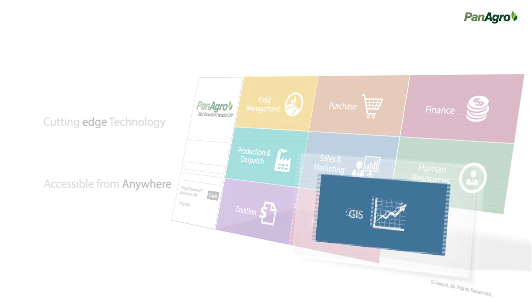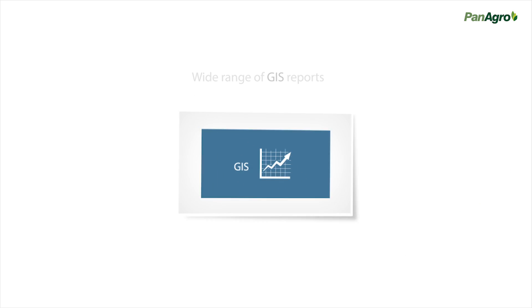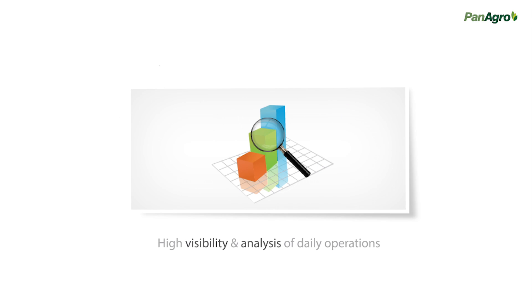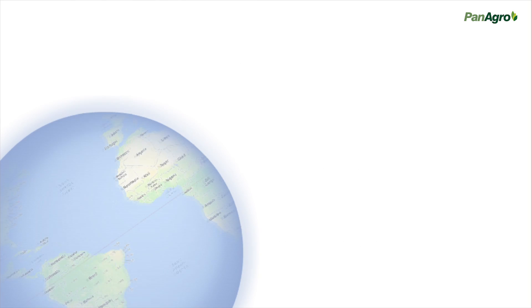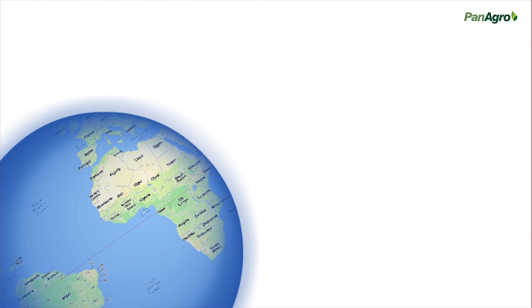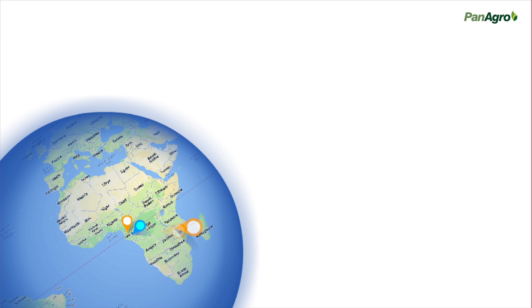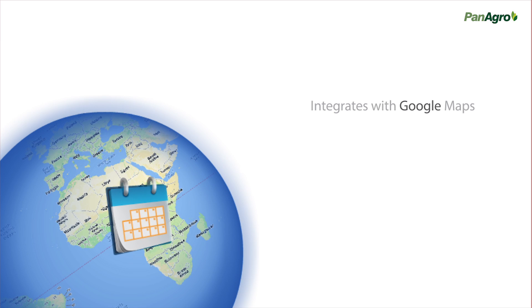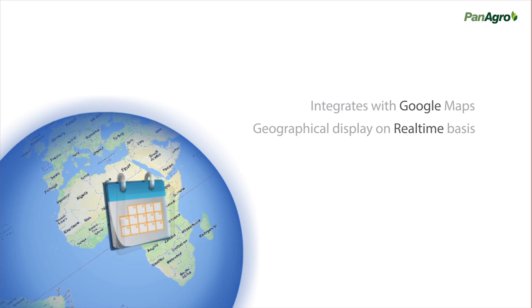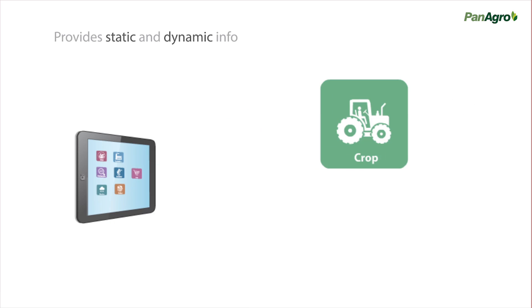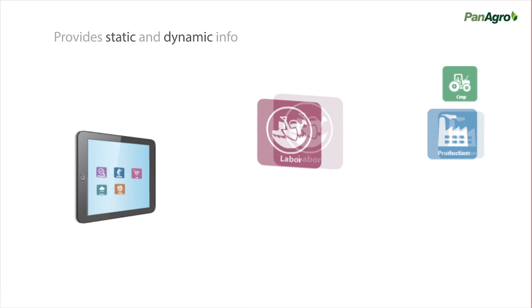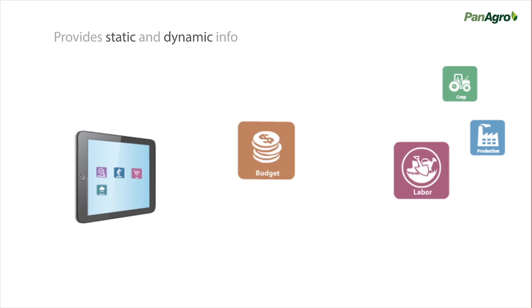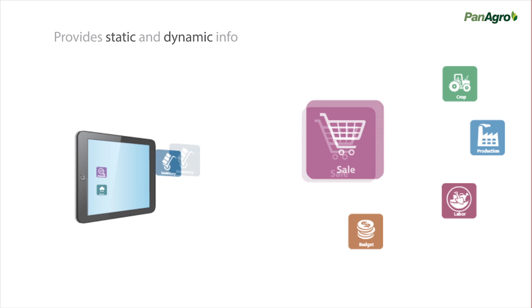It generates a wide range of GIS reports, providing high visibility and analysis of daily operations. One of the GIS reports in Panagro integrates with Google Maps, providing geographical display on a real-time basis. It provides static and dynamic information from within a unit and presents it in the form of statistical data.